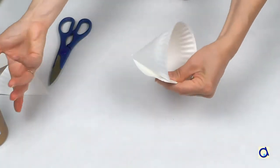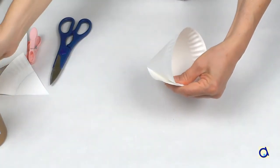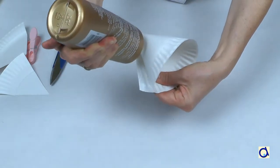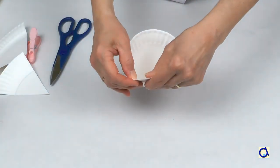Form a cone with the rest of the paper plate. Glue the edges of the plate together with white glue and hold in place with a clothespin and let dry.